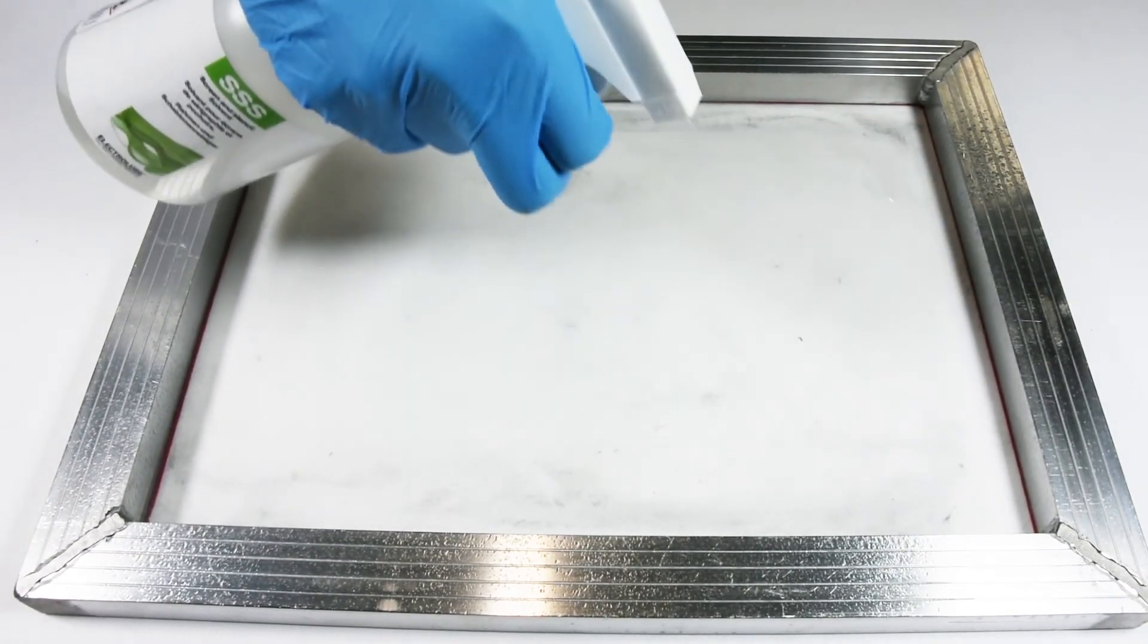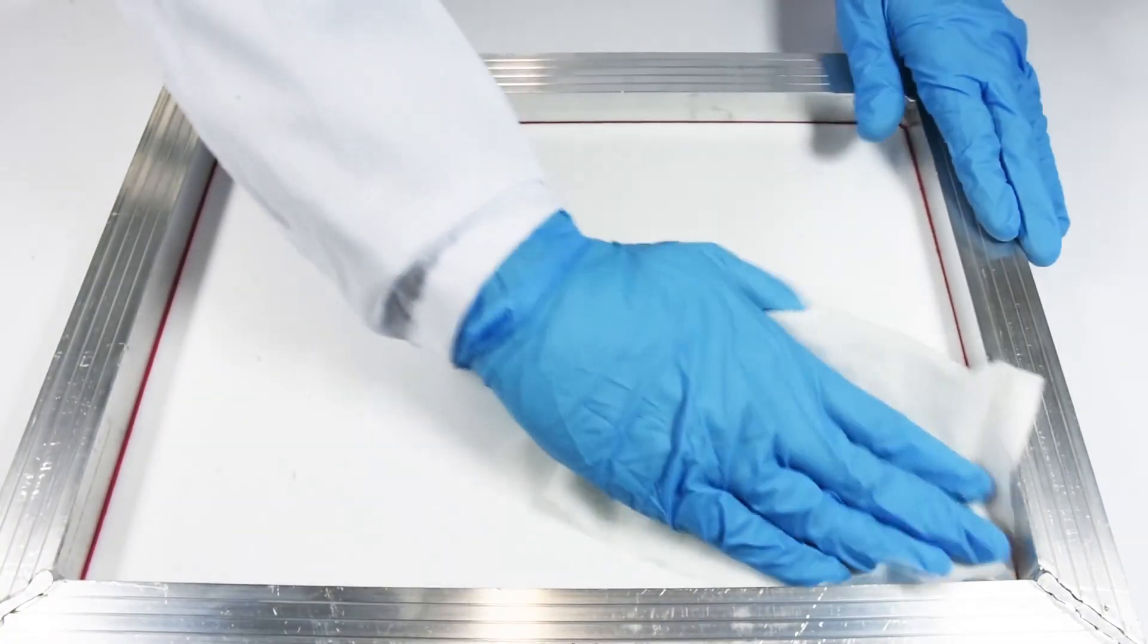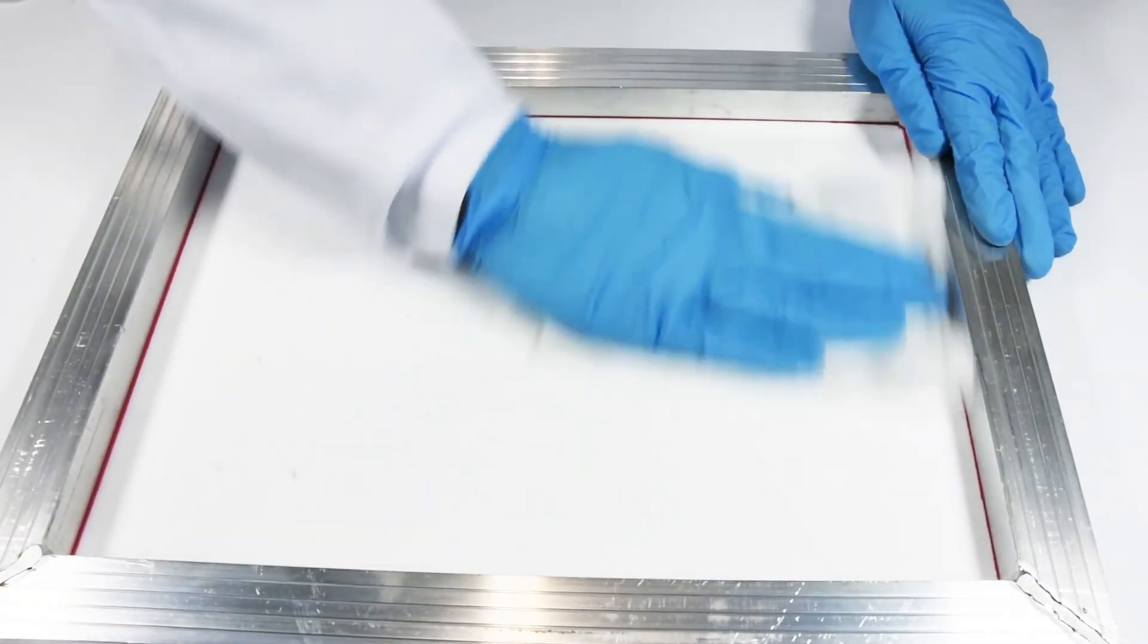To clean the screen after use, wipe off any excess with a dry cloth and then clean with Electrolube SSS Screen and Stencil Solvent.